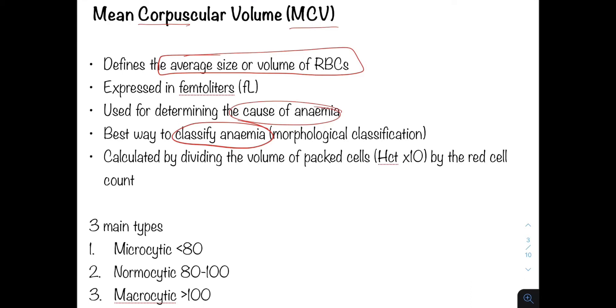It is calculated by dividing the volume of packed cells by the red cell count and this gives the mean value. Now the MCV can be characterized into three main types depending on the morphology or the size of the red cell.